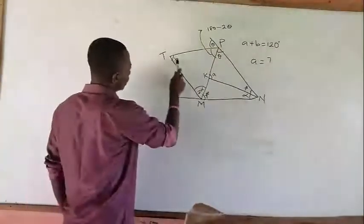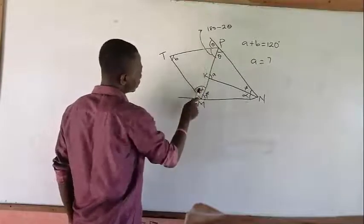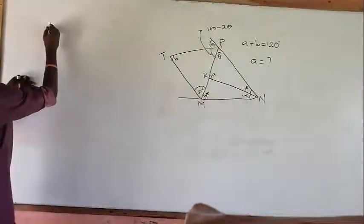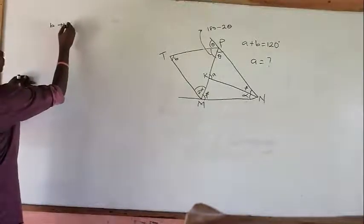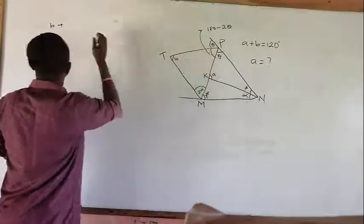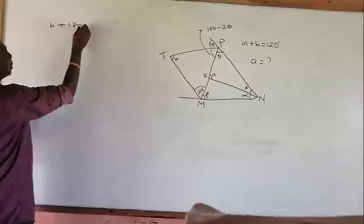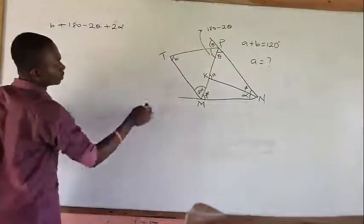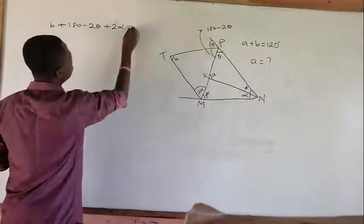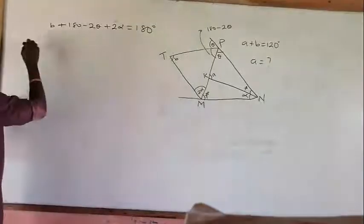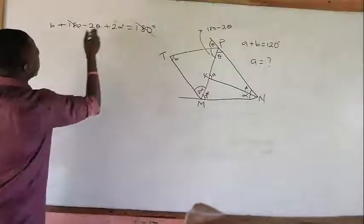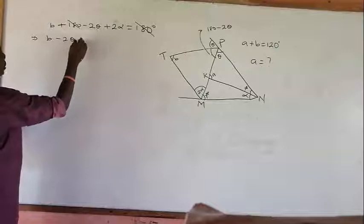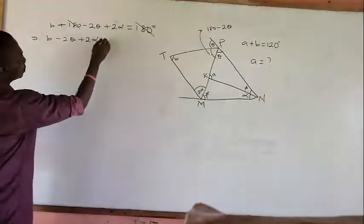Now this angle plus this angle plus this angle plus this angle equals 180 degrees. So B plus (180 minus 2 theta) plus (180 minus 2 theta) plus 2 alpha — so B plus these sides equals 180 degrees. So the 180s will cancel, leaving B minus 2 theta plus 2 alpha equals zero.